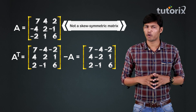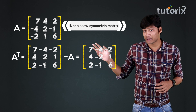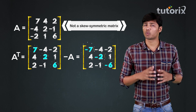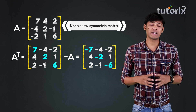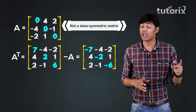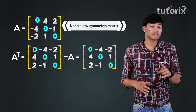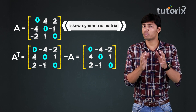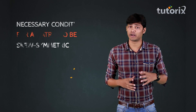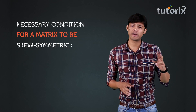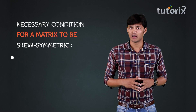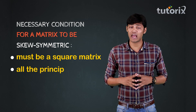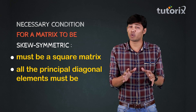Wait a minute. We observe that all the elements except the principal diagonal elements in both the matrices A transpose and minus A are equal. So if the principal diagonal elements in the matrix A are all equal to 0, then the matrix A will be a skew-symmetric matrix since A transpose will be equal to minus A. For a matrix to be skew-symmetric, it should follow two basic conditions: first, the matrix should be a square matrix, and second, all the principal diagonal elements in that square matrix must be equal to 0.